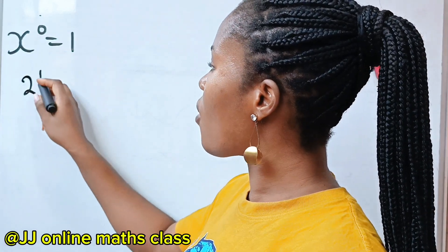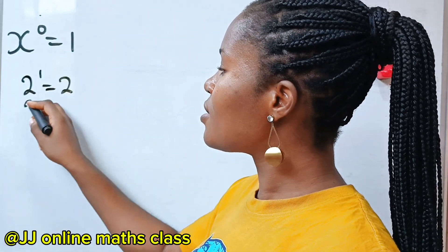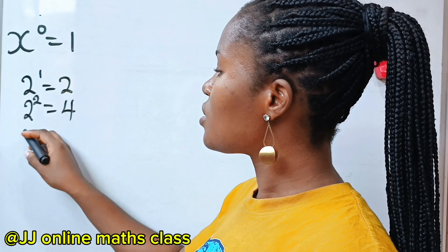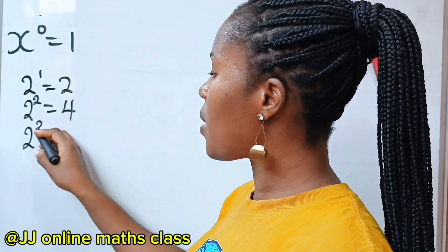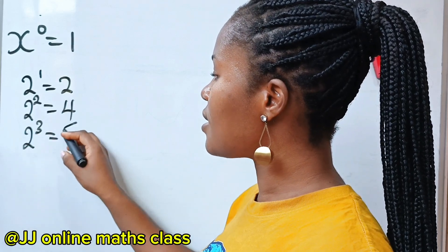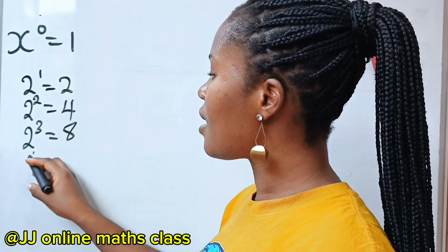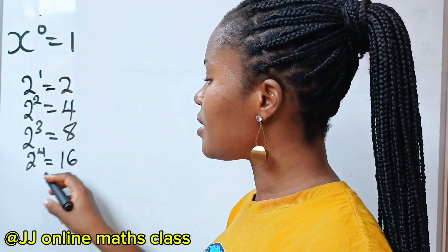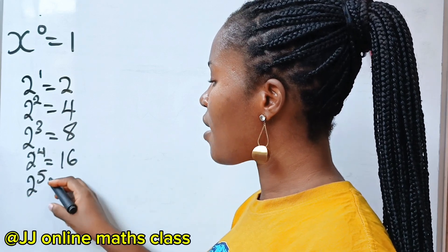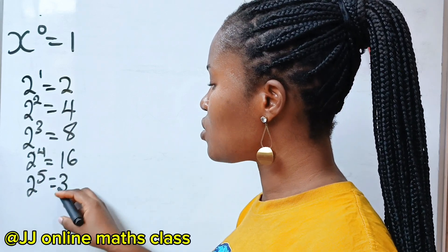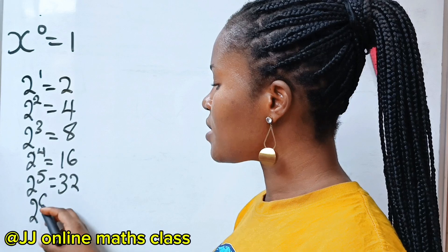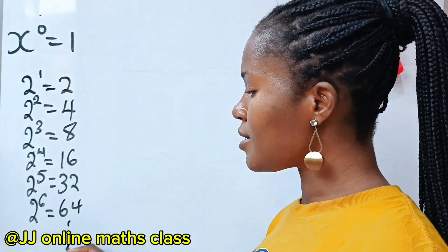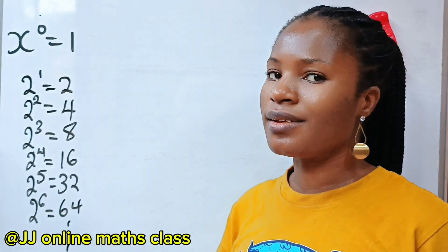2 to the power of 1 is 2. 2 to the power of 2 is 4. 2 to the power of 3 is 8. 2 to the power of 4 is 16. 2 to the power of 5 is 32. 2 to the power of 6 is 64. And the list goes on and on.